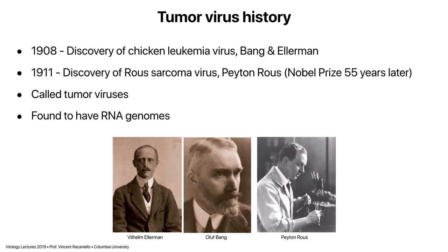These were the first viruses shown to cause cancer, both in chickens. Working at the Rockefeller Medical Institute, Rous discovered this. These were called tumor viruses. By 1908, we already knew pretty much what a virus is. Later, in the 1950s, when we began studying viral genomes, we found that these had RNA genomes, so they were called RNA tumor viruses.